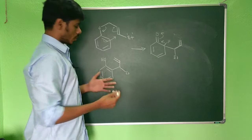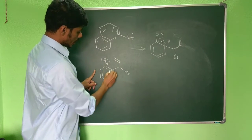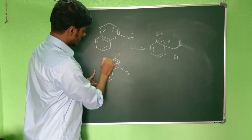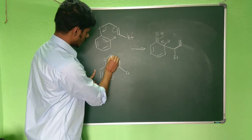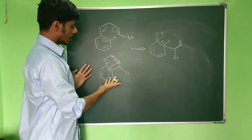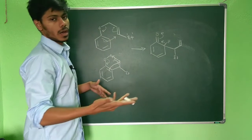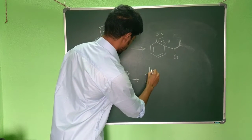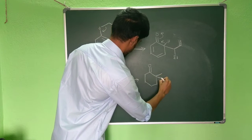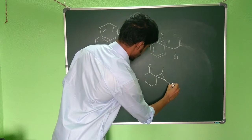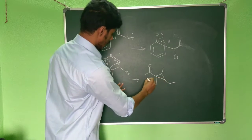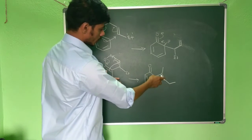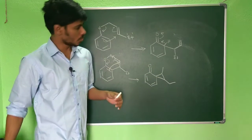Instead, a very interesting step occurs: the oxygen lone pair pushes back, and this bond can pick up a proton — either intramolecularly or intermolecularly from other molecules. What we get is a three-membered ring system (cyclopropane) with the ethyl group. So the ethyl group opens up and forms this cyclopropane intermediate. This three-membered ring is not symmetric.